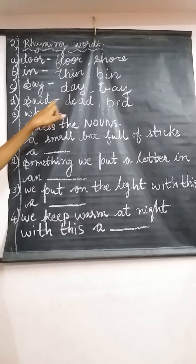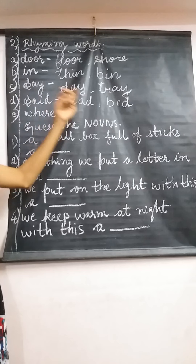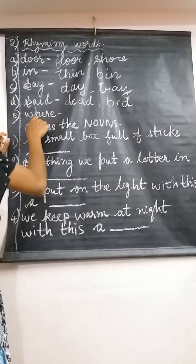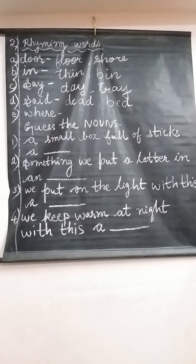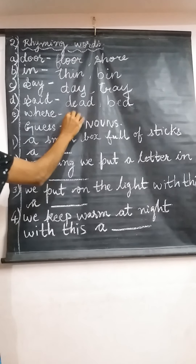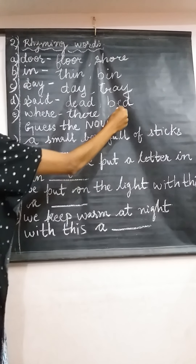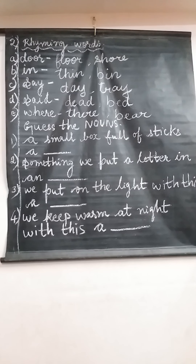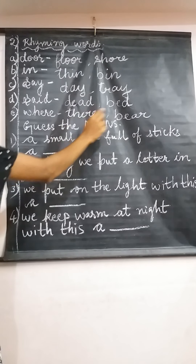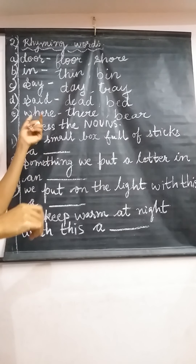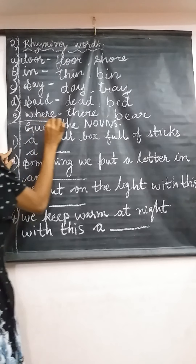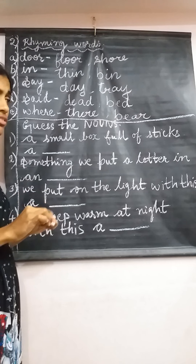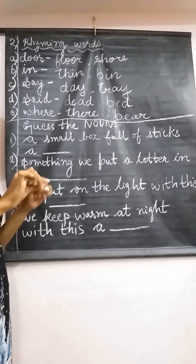You can observe the ending sound of 'said' — the '-ed' sound is similar across those words. Next, we have 'where'. What can you write as a rhyming word for 'where'? We can write 'there' and 'bear'. Both match the word 'where'. So remember: rhyming words are those which have the ending sound the same or similar — it can be exactly the same or just similar.